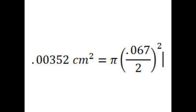I want to work in centimeters, so I converted that number into centimeters, and I divided by two to get radius, and I squared that, and multiplied by pi to get the area of 0.00352 centimeters squared.